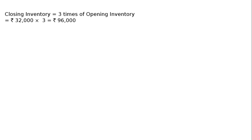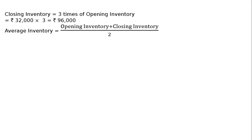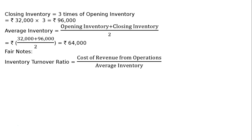Now, average inventory equals opening inventory plus closing inventory divided by 2, that is ₹32,000 plus ₹96,000 divided by 2, which equals ₹64,000. From the working notes, inventory turnover ratio equals cost of revenue from operations divided by average inventory, that is ₹3,20,000 divided by ₹64,000, which equals 5 times.